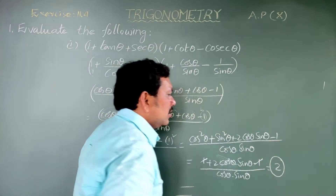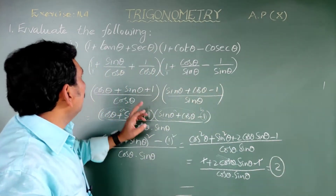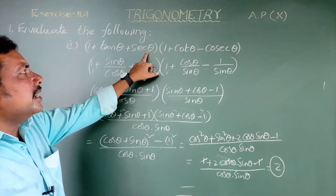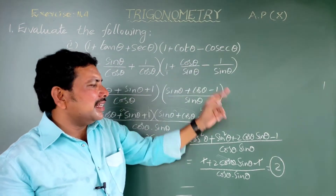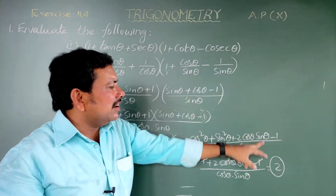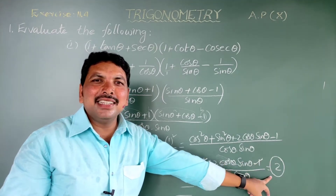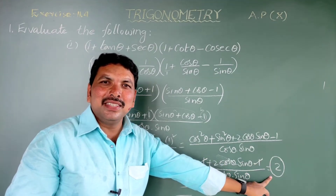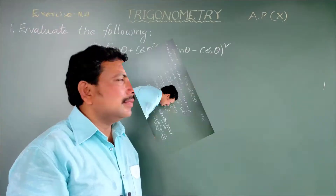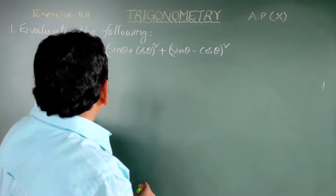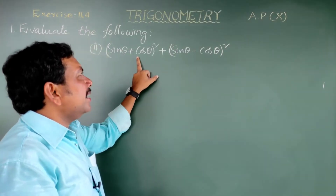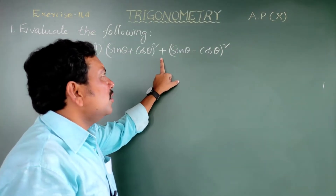Therefore, (1 + tan theta + sec theta) into (1 + cot theta - cosec theta) equals 2. Now evaluate the following — second sum: (sin theta + cos theta)² plus (sin theta - cos theta)².